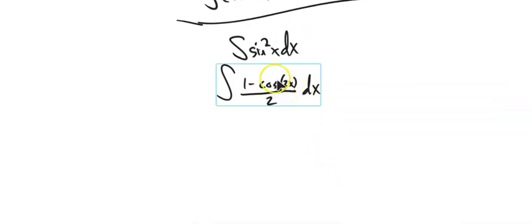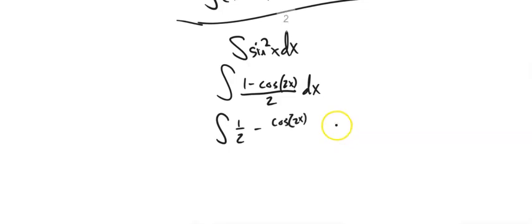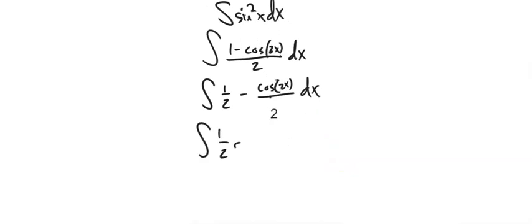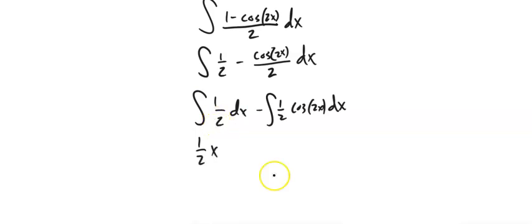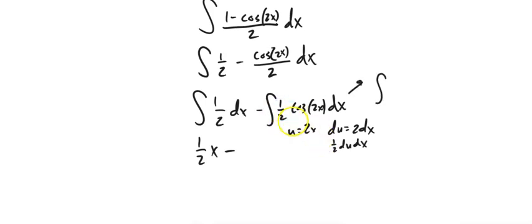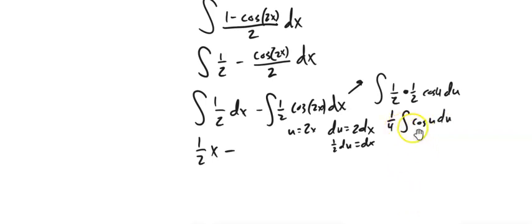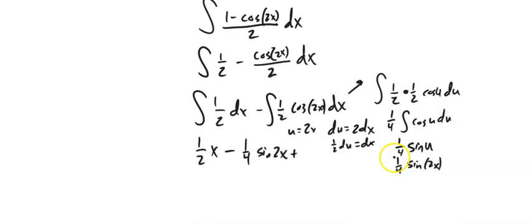Rewriting sine squared as one minus cos(2x) over two, that's just cosine — not cosine squared — so I know how to integrate it. Splitting into two pieces: one half x minus the second integral. For that second part, let u equal 2x, du equals 2 dx, so one half du equals dx. This becomes one fourth times the integral of cosine u du, which equals one fourth sine(2x) plus C.